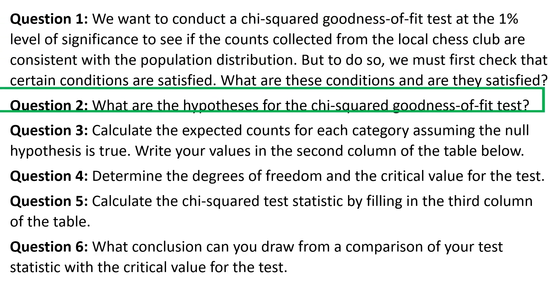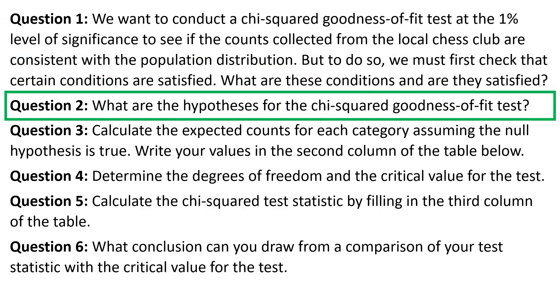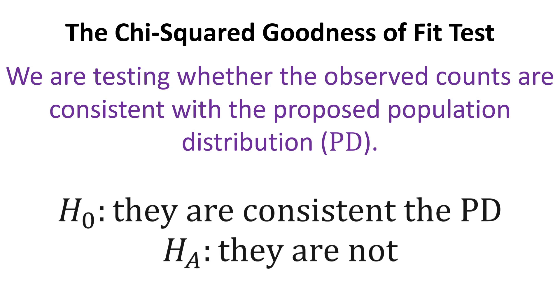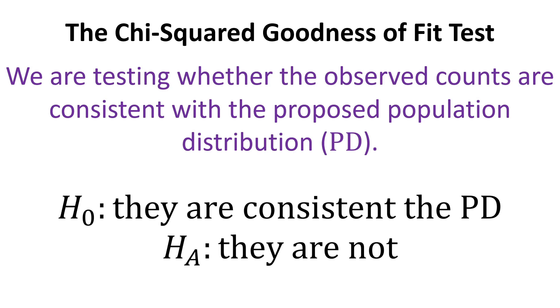What are the hypotheses for the chi-squared goodness-of-fit test? We are testing whether the observed counts are consistent with the proposed population distribution. The null hypothesis is that they are consistent. The alternative is that they are not.